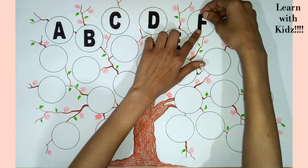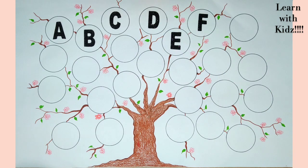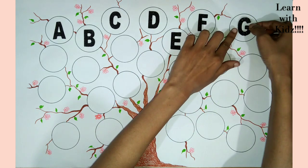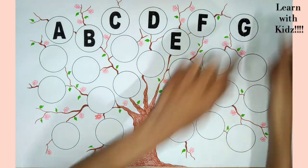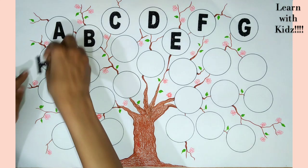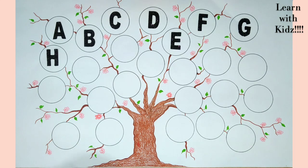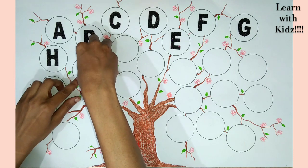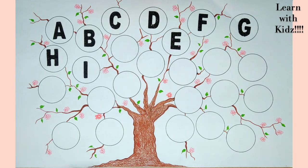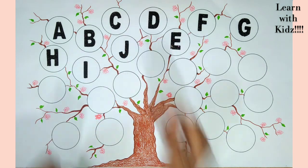F for fish. G for grapes. H for hen. I for ice cream. J for jug.